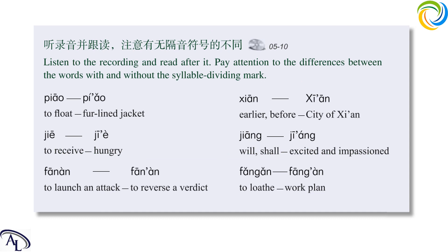听录音并跟读，注意有无隔音符号的不同。Listen to the recording and read after it. Pay attention to the differences between the words with and without the syllable dividing mark. 飘，皮奥，仙，西安，街，饥饿，江，饥昂，翻案，反感，方案。